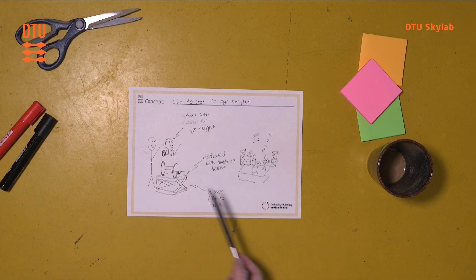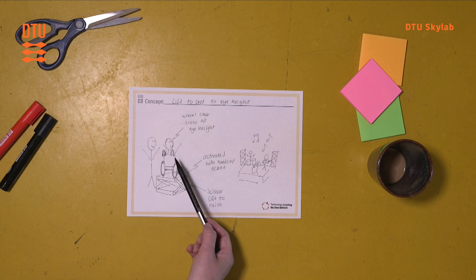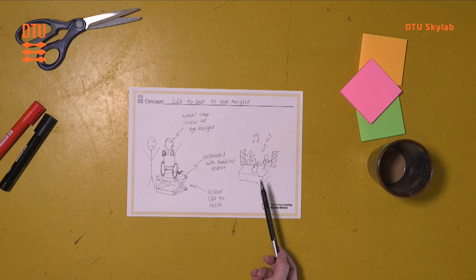So for instance, here is a sketch of a lift to get to eye height at a concert for a wheelchair user. You can see that they're happy because the wheelchair user has been lifted by a scissor lift to be in the same eye height as their friend, and then they can enjoy the concert together.